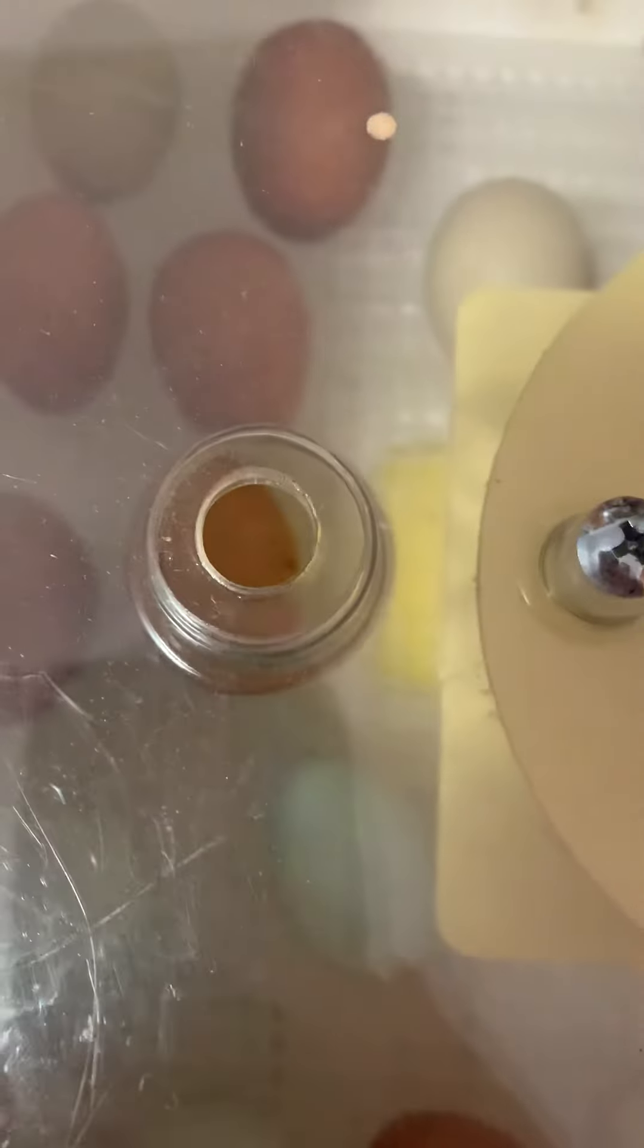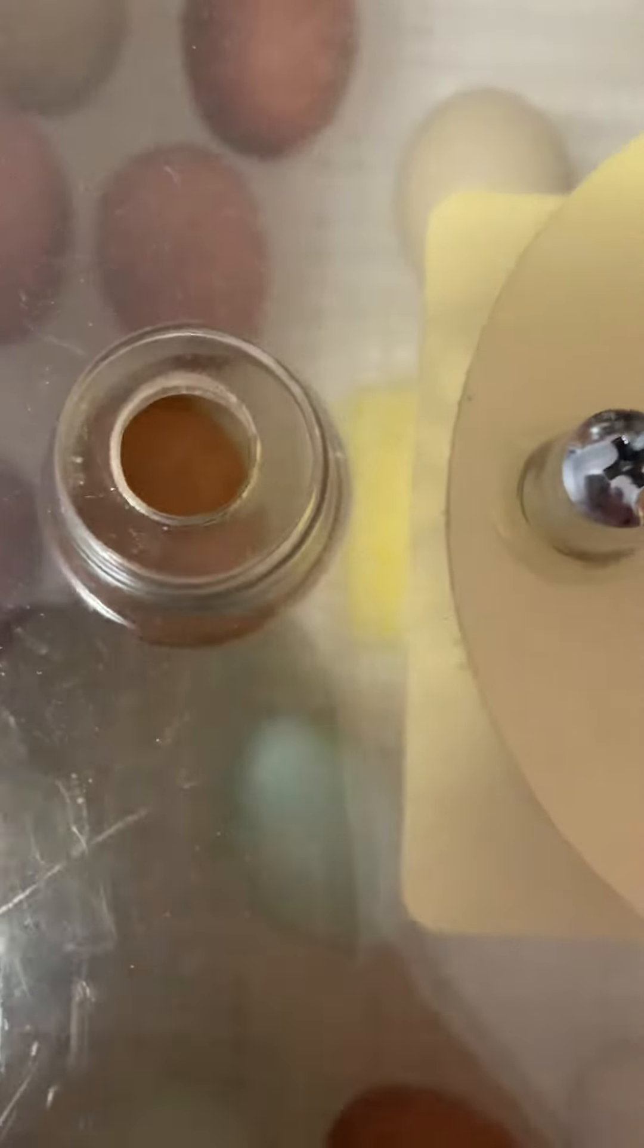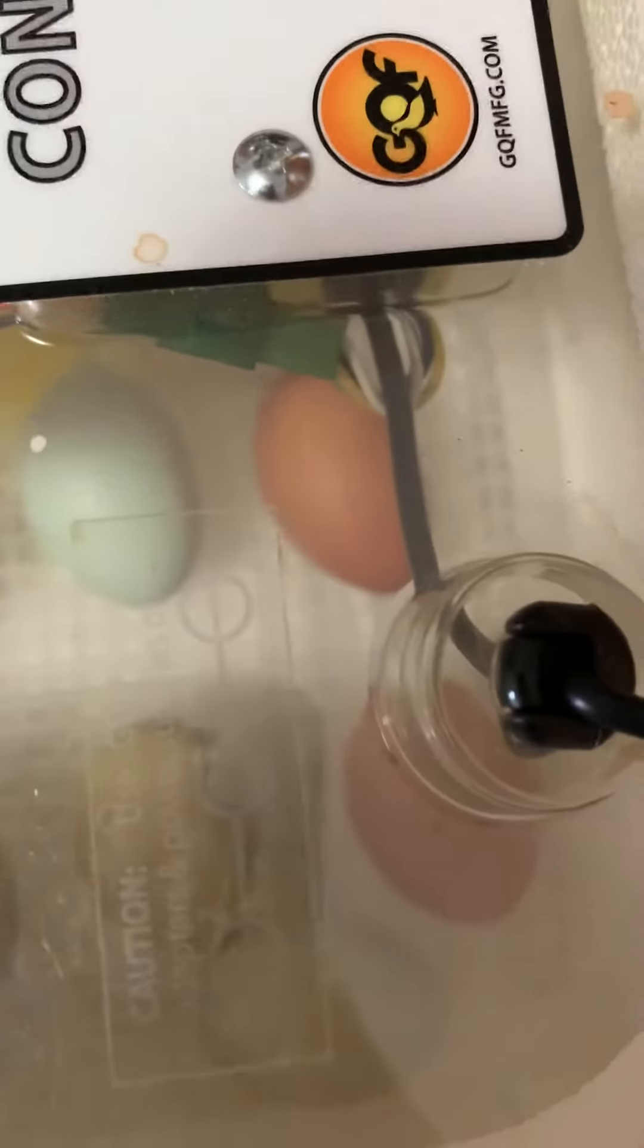So we are done with that stage and now we are on day 18. It can take up to 21 or 22 days for a chicken egg to hatch, so we're hopefully going to see something within the next couple of days.